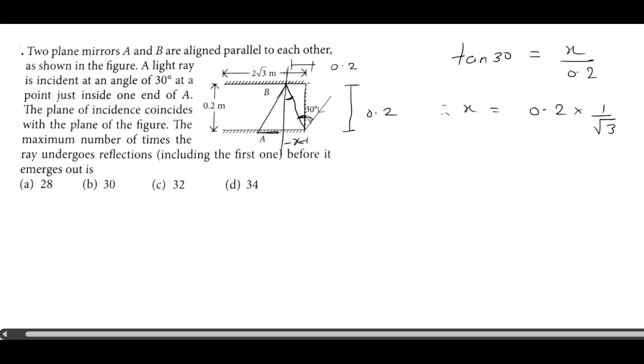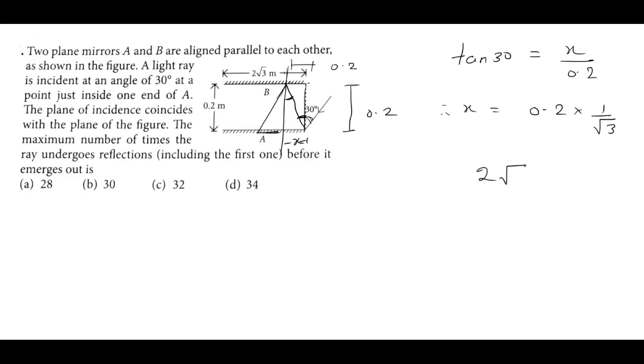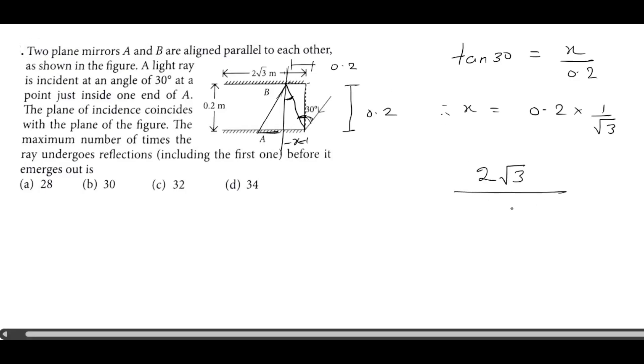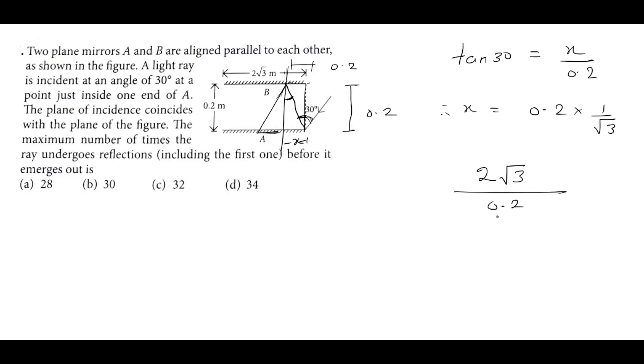This is the second reflection, so this will be the same distance. So here we have total length that is 2 root 3. We will divide: 0.2 divided by root 3. So if you have divided, then you will see that 2 root 3 times root 3 divided by 0.2.